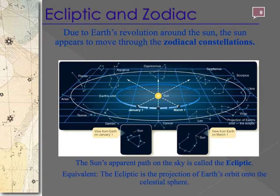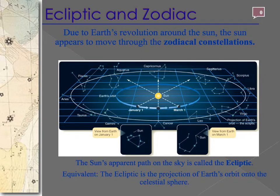The ecliptic is the apparent path of the sun, and we can think of it as an extension of Earth's equator into the celestial sphere — the conceptual sphere of stars that appears to move around us. The ecliptic is the path that everything follows. The planets are always aligned along the ecliptic because the sun, planets, and moons all exist in a relatively equal orbital plane. The sun moves through the signs of the zodiac along the ecliptic.